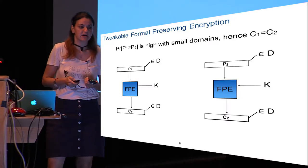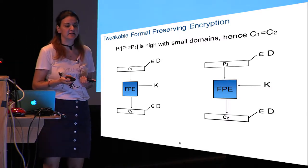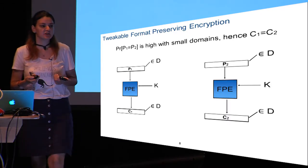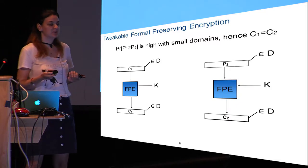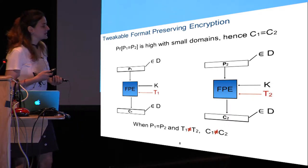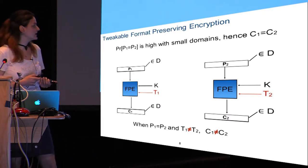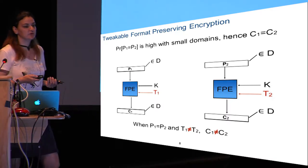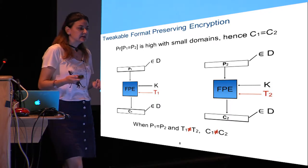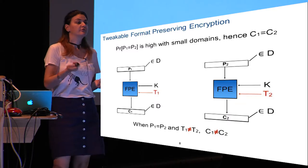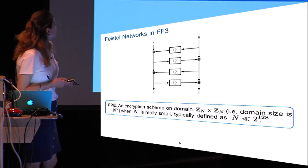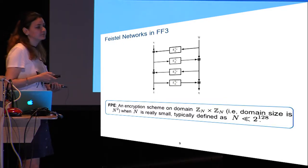Before explaining encryption, let's look at what tweakable format preserving encryption is. FPE is a deterministic encryption because the length of the message has to be preserved in the ciphertext, so it cannot be randomized. Since FPE is designed for small domain sizes, it is vulnerable to dictionary attacks — it's very likely that two messages will encrypt to the same ciphertext. To prevent this, the constructions introduce a tweak: as long as two tweaks are different, they define two different pseudo-random permutations. Tweaks are publicly available and under the control of the adversary.